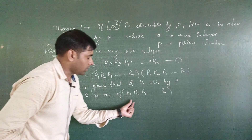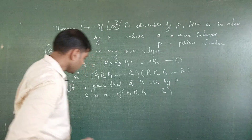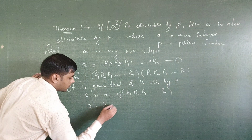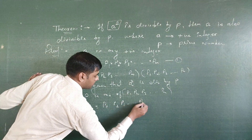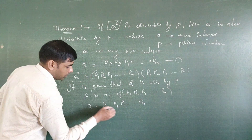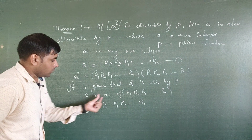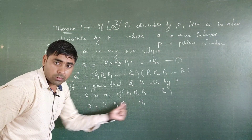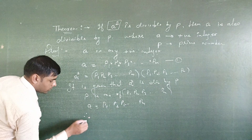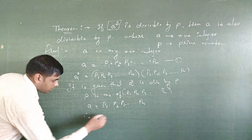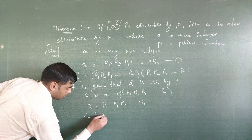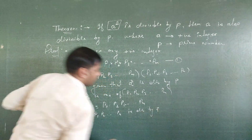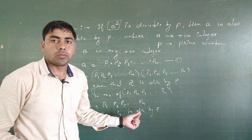Since p is one of p1, p2, p3, ..., pn, and a equals p1 × p2 × ... × pn, p will divide the product of these numbers. Therefore, a — which equals p1 × p2 × ... × pn — is divisible by p, because p is one of these prime factors.